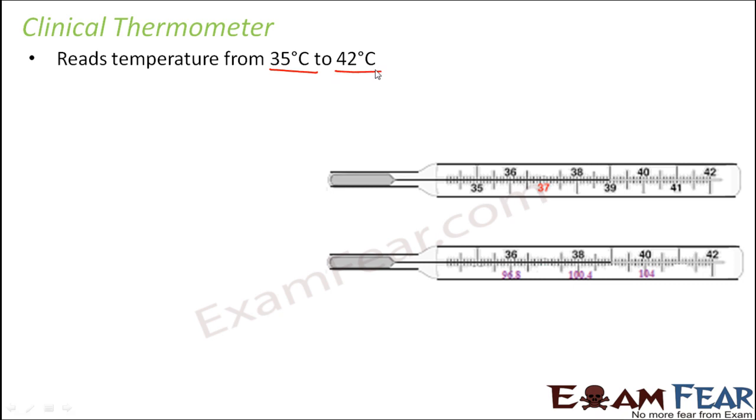You see, it's a very small range actually. It doesn't read over a longer range because when you talk about the Celsius scale, it can even start from 0 degree Celsius. It can even start from negative values. But here it is just from 35 degrees to 42 degrees.